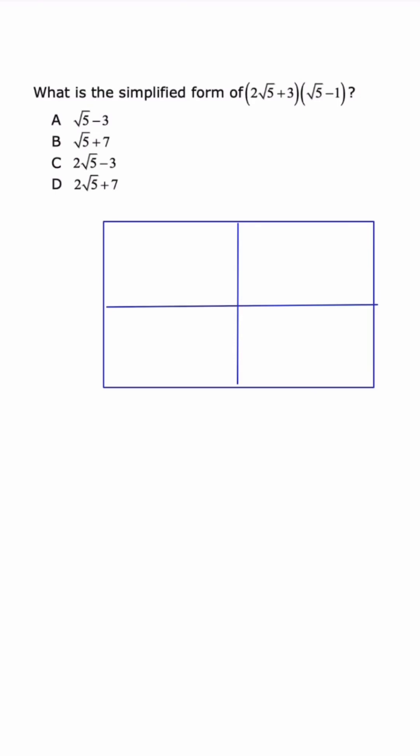For students that struggle with foiling with radical expressions, please use the box method. So we have 2√5 plus 3 on top. Don't have to put the plus sign unless it's negative. And we have √5 minus 1.